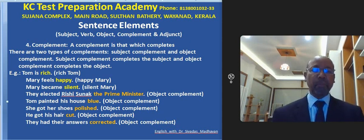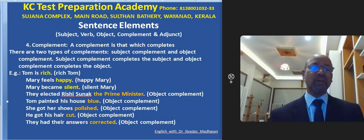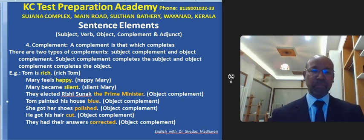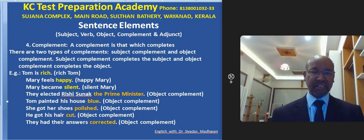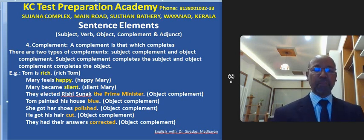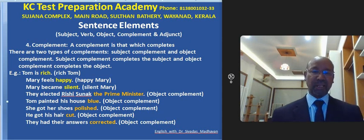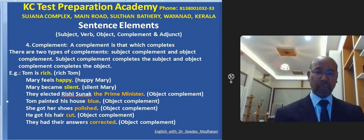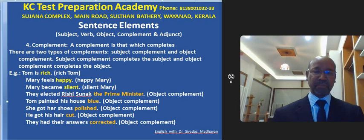Subject complement completes the subject and object complement completes the object. An example: Tom is rich. Tom is subject, is is his verb, rich is complement — rich completes Tom. Complement completes the subject.